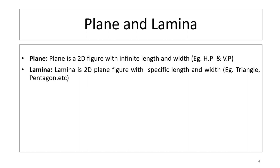The very first thing you need to learn is what is a plane and what is the difference between a plane and a lamina. A plane is a 2D figure with infinite length and width. A lamina is a 2D plane figure with specific length and width. For example, a paper can be considered as a plane, and a triangle drawn on that paper can be considered as a lamina.